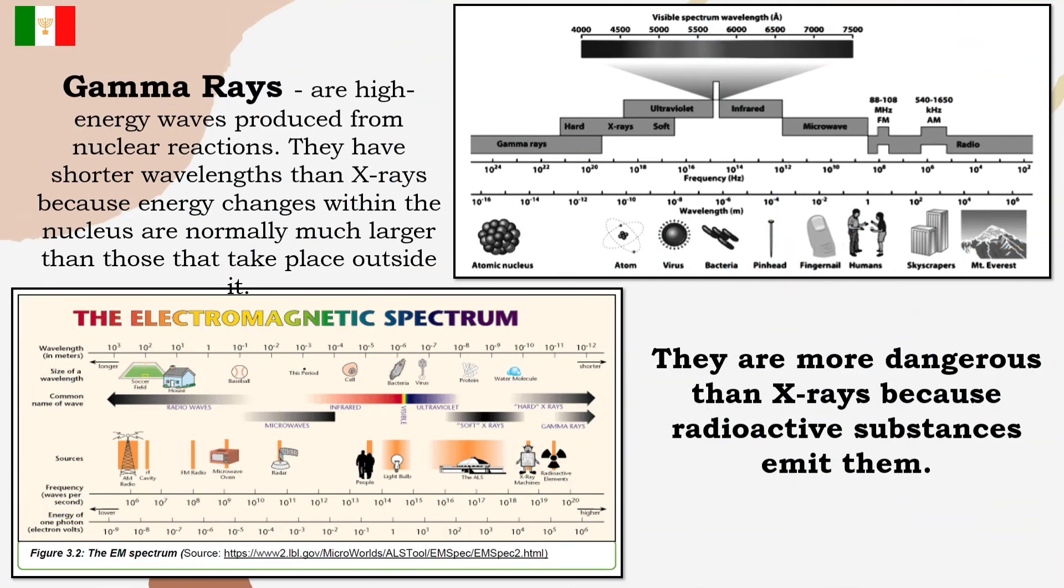Gamma rays are high energy waves produced from nuclear reactions. They have shorter wavelengths than x-rays because energy changes within the nucleus are normally much larger than those that take place outside it. They are more dangerous than x-rays because radioactive substances emit them. A gamma ray or gamma radiation is a penetrating form of electromagnetic radiation arising from the radioactive decay of atomic nuclei. It consists of the shortest wavelength electromagnetic waves and so imparts the highest photon energy.